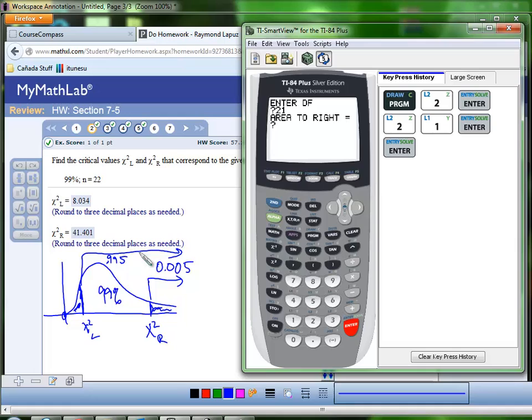And then now they're looking for the area to the right. So we're going to have to do this twice, one for the left and one for the right. So if we get the left, we get an area of 0.995.